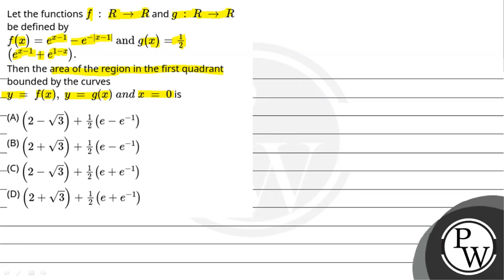We are given options: option A is 2 - √3 + (1/2)(e - e^(-1)), option B is 2 + √3 + (1/2)(e - e^(-1)), option C is 2 - √3 + (1/2)(e + e^(-1)), and option D is 2 + √3 + (1/2)(e + e^(-1)).